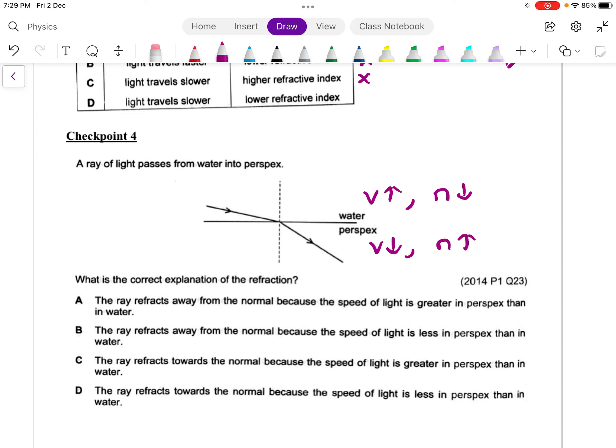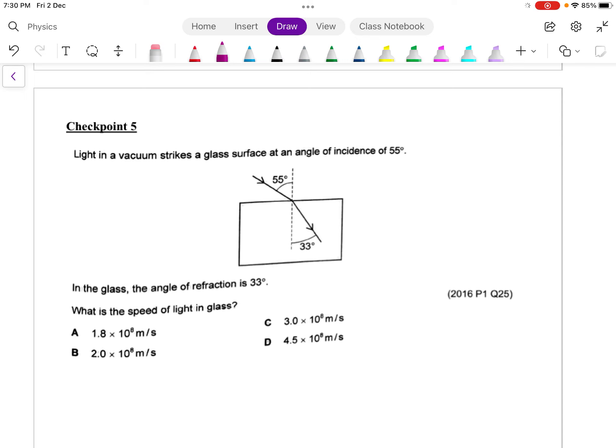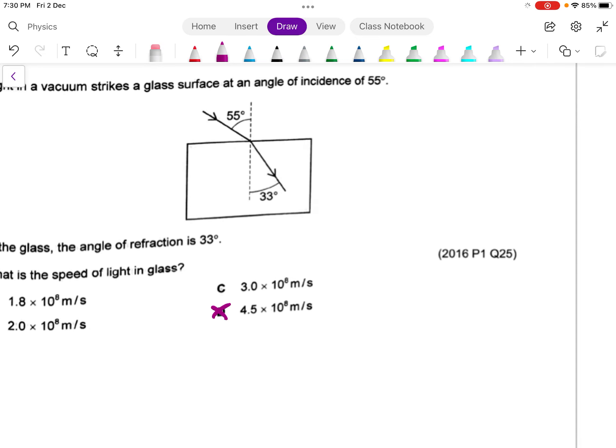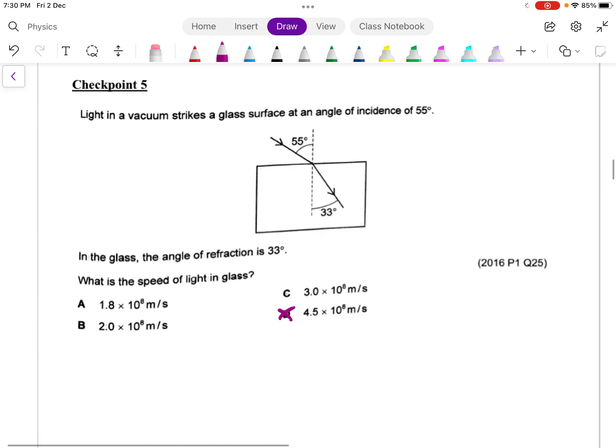Let's go to checkpoint 5, a bit of calculation. We have this light in a vacuum striking a glass surface at an angle of incidence of 55 degrees. In the glass, the angle of refraction is 33 degrees. What is the speed of light in glass? First thing, let's eliminate one of the options. Option D, confirm, is wrong. Notice 4.5 times 10 to the 8 meters per second - this way, I already break the law of physics.